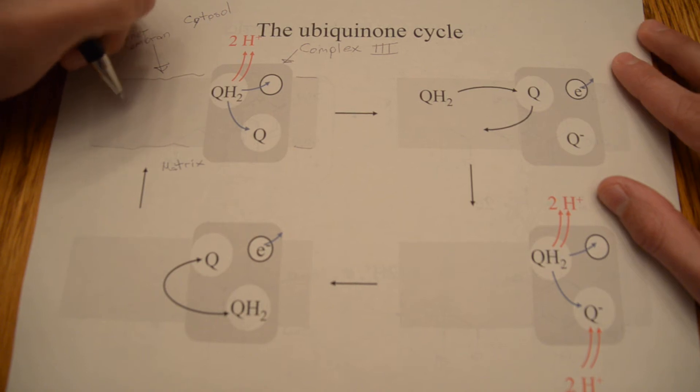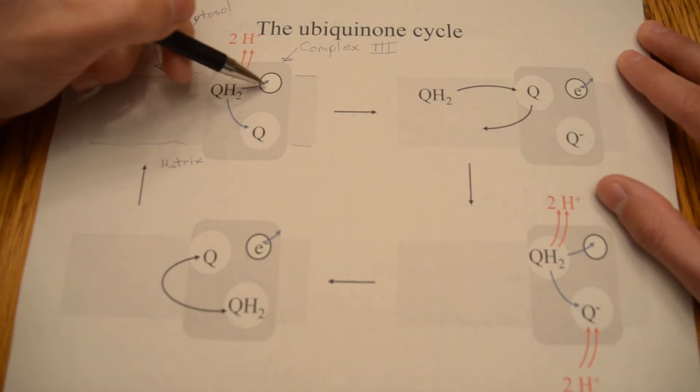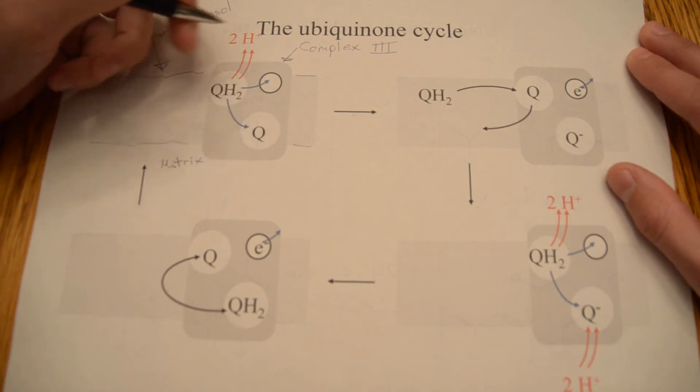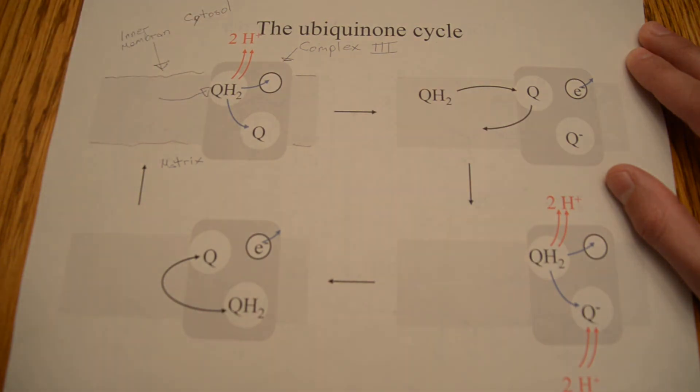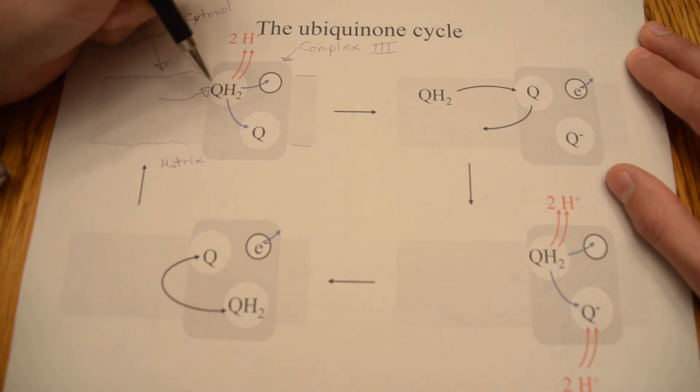So what first happens is, these two active sites are always full, and here we have an electron acceptor, which could be an iron sulfur cluster, or maybe a heme group, something of that nature. So these two active sites are full, because first, a reduced ubiquinone molecule comes in here, and then what it will do is it will expel its two protons into the cytosol,